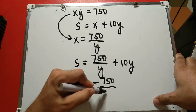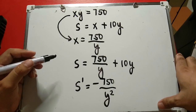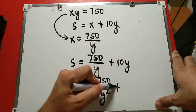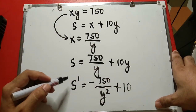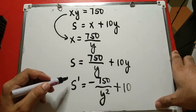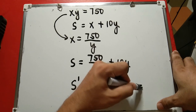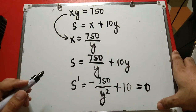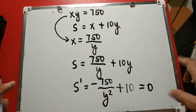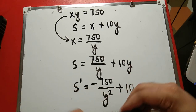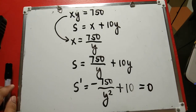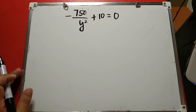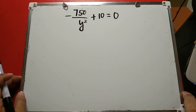Set S prime equal to zero to find the minimum: negative 750 over y squared plus 10 equals zero. Multiply both sides by y squared to clear the denominator, giving negative 750 plus 10y squared equals zero.